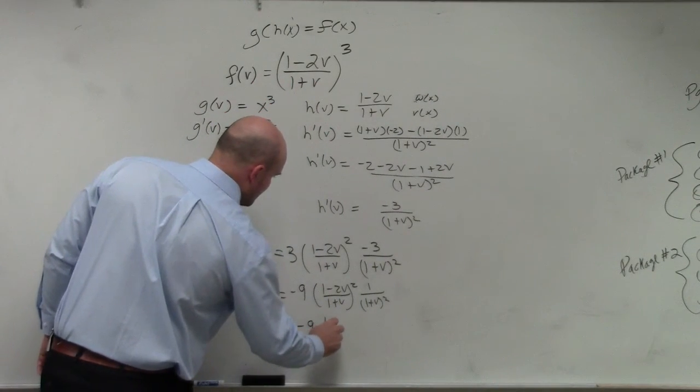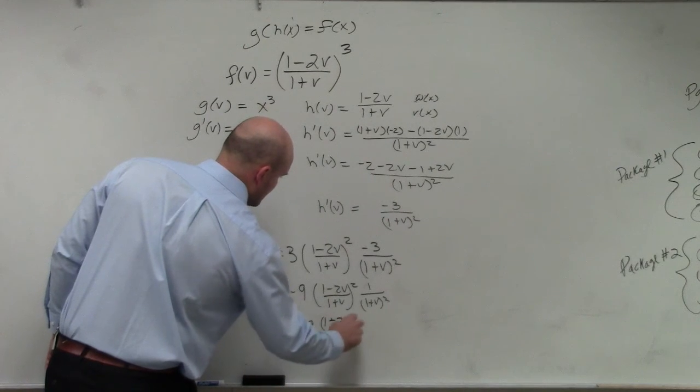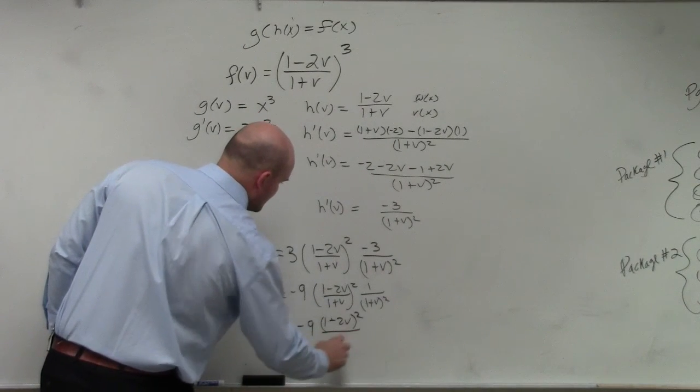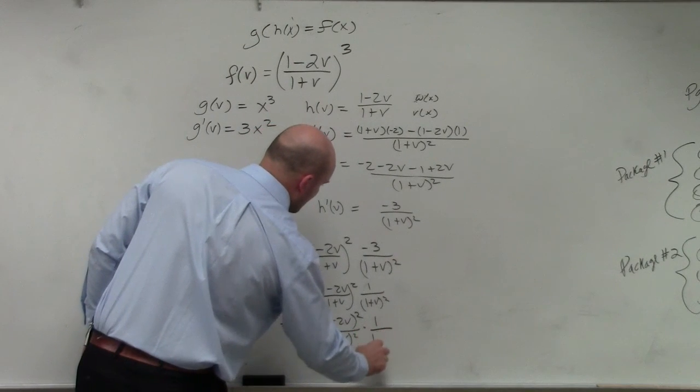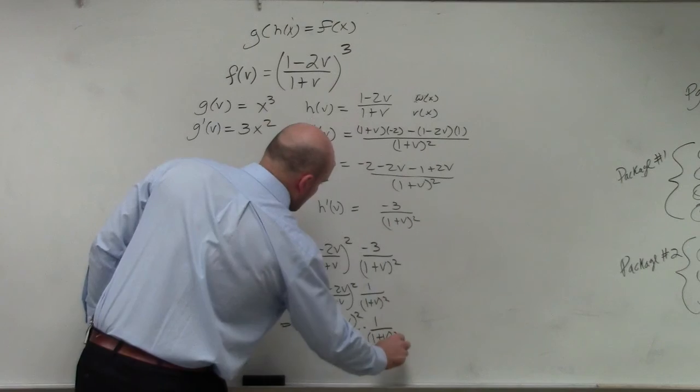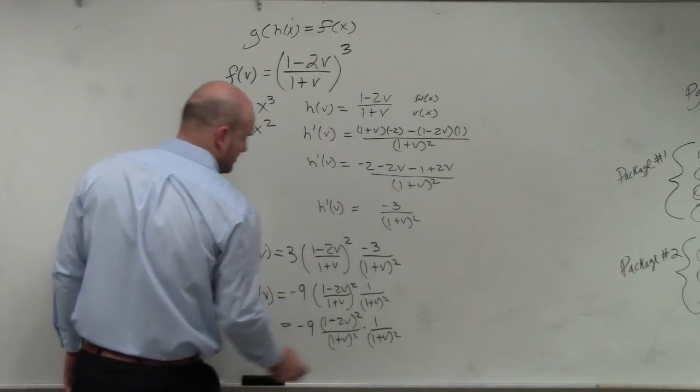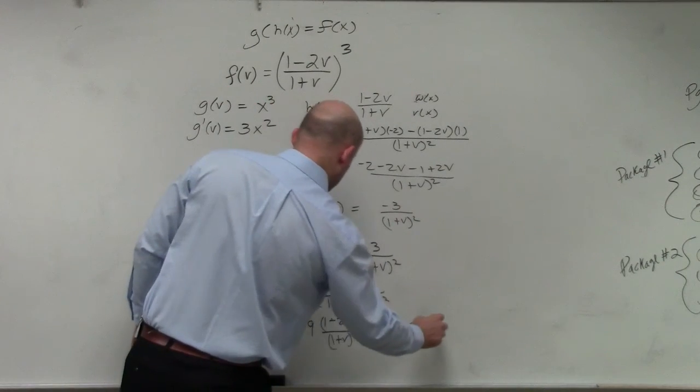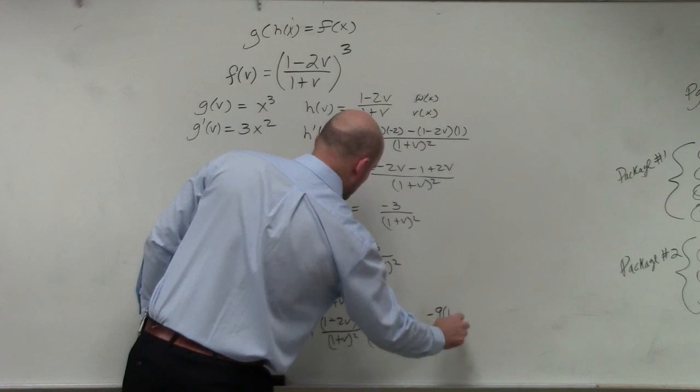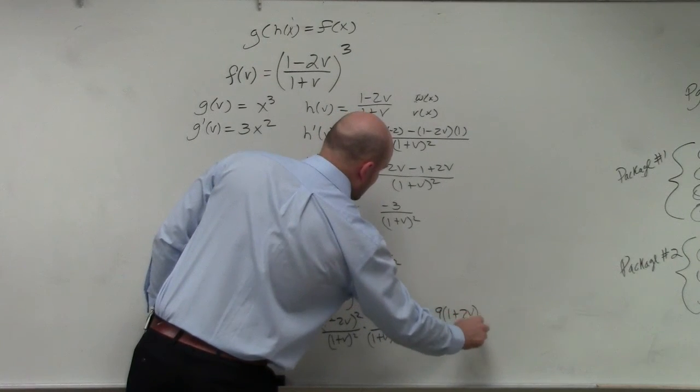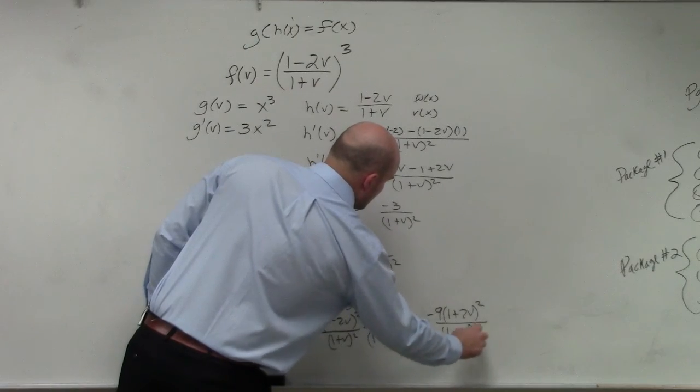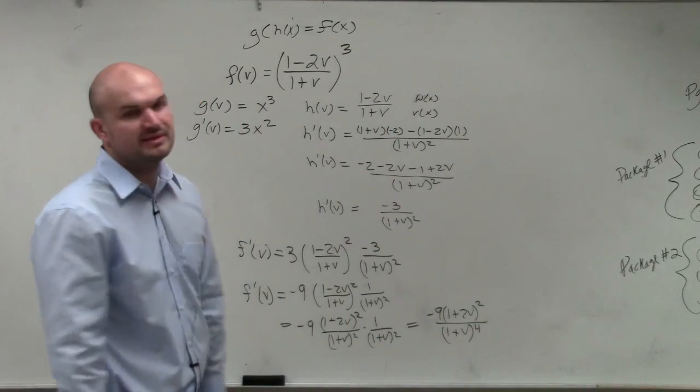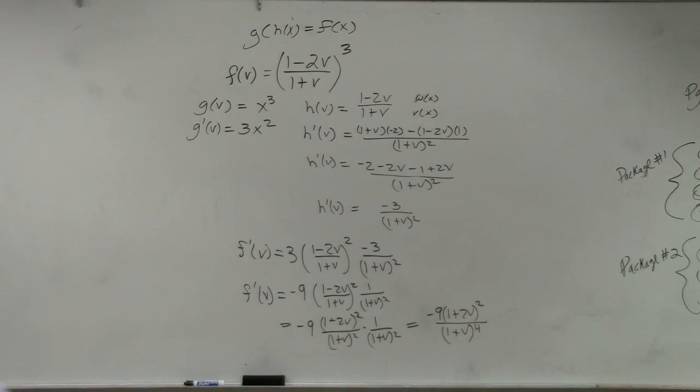Negative 9, 1 minus 2v. These are like terms. So it's 1 plus v squared times 1 over 1 plus v squared. So therefore, these two multiplied out is going to give us a final answer of negative 9 times 1 minus 2v squared over 1 plus v to the fourth. But that is simplified. You don't need to expand those out any further.